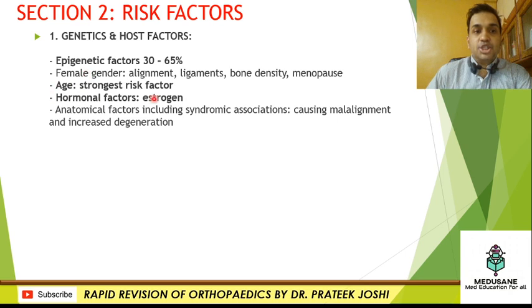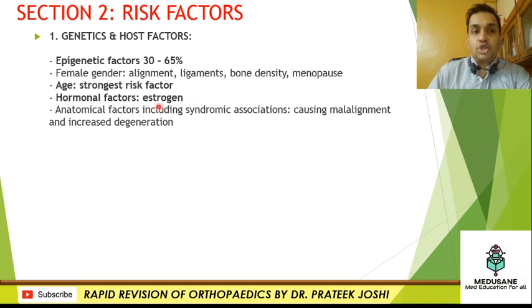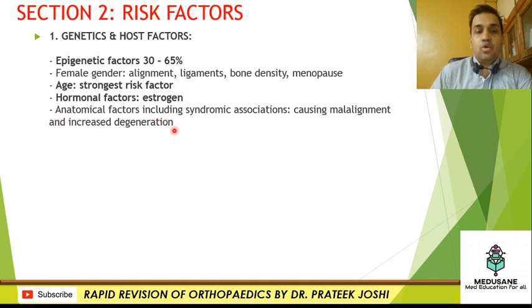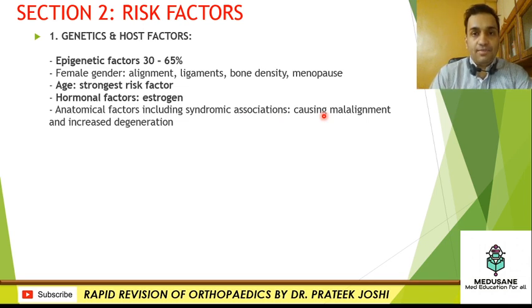Age is the strongest risk factor responsible for osteoarthritis — strongest in males, females, and overall. Among hormonal factors, estrogen is the most important risk factor for osteoarthritis in females. To clear a common confusion: estrogen is protective against osteoporosis — correlating with increased osteoporosis in postmenopausal females — however estrogen is an increased risk factor for osteoarthritis. Anatomical factors including syndromic associations that cause deformities in the weight-bearing lower limbs, causing excessive degrees of varus or valgus, lead to malalignment and increased biomechanical degeneration.